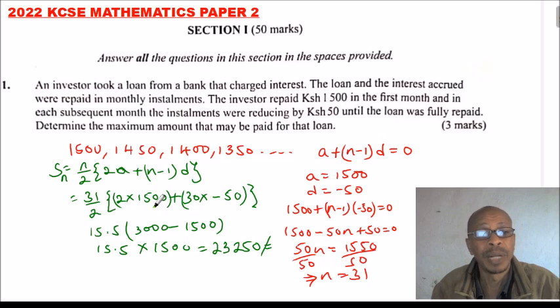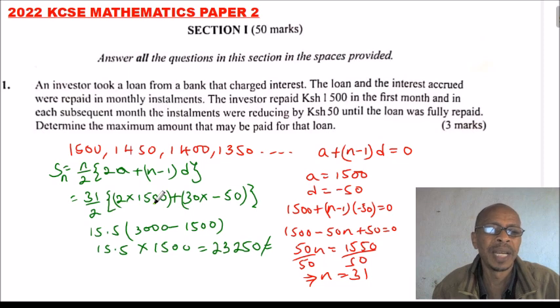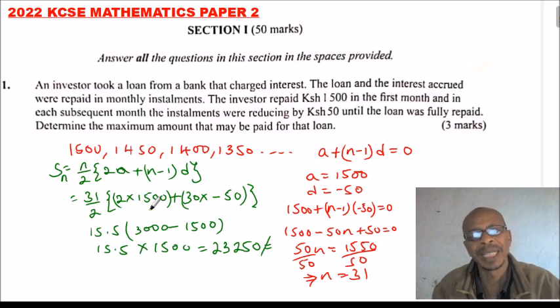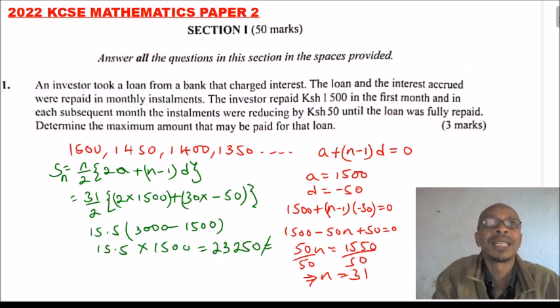You are being tested on whether you understand sequences, which you learned in Form 3, where you learned about the first term, the common difference for arithmetic sequence and geometric sequence. You also learned the sum of the nth terms for arithmetic progression as well as geometric progression.